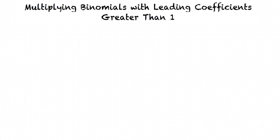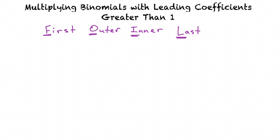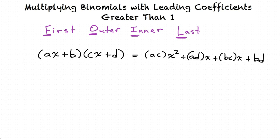FOIL stands for first, outer, inner, and last. If we have the multiplication of two binomials in the form of ax plus b times cx plus d, the result is acx squared plus adx plus bcx plus bd.